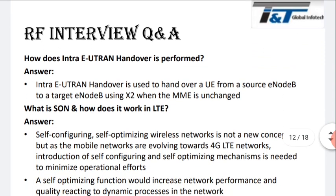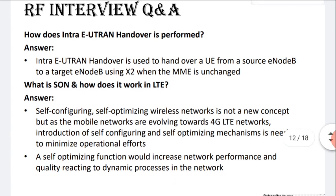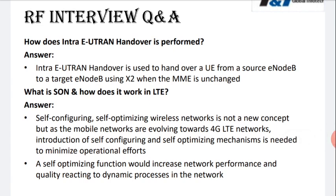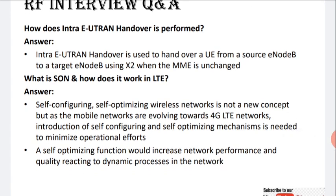How does intra-eUTRAN handover work? Intra-eUTRAN handover is used to hand over a UE from a source eNodeB to a target eNodeB using the X2 interface when the MME is unchanged. You just have to remember: intra handover happens when MME is unchanged, and this handover is performed between source eNodeB and target eNodeB.